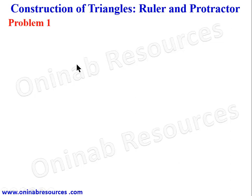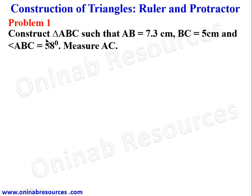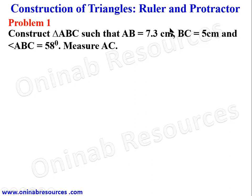Here we take our first problem. Problem one: construct triangle ABC such that AB is 7.3 centimeters, BC is equal to 5 centimeters, and angle ABC is equal to 58 degrees. Measure AC. It should occur to us that we cannot construct angle 58 degrees using a pair of compasses, so what we'll be doing is using the protractor.